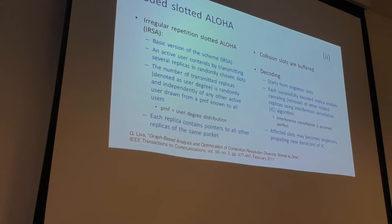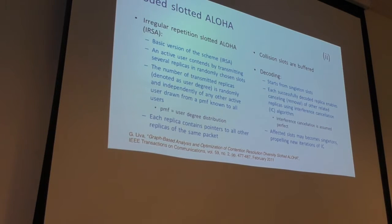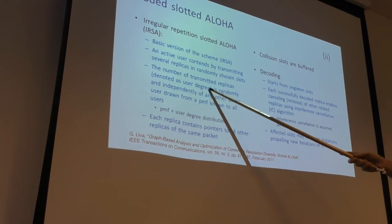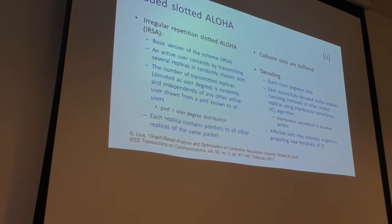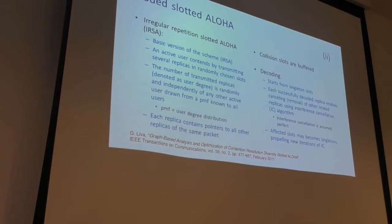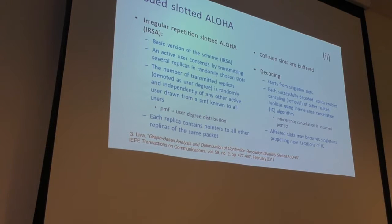In IRSA, we have a frame of slots. An active user contends by transmitting several replicas of the same packet. Each user has a certain degree — the number of replicas — chosen randomly and independently from all other active users using the same probability mass function. So there is a PMF that specifies, for example, transmitting two replicas with probability 0.12 and five replicas with probability 0.17, and so on.